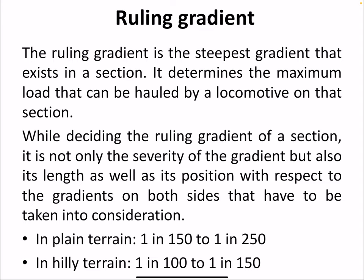The ruling gradient is the steepest gradient that exists in a section. It determines the maximum load that can be hauled by a locomotive on that particular section. While deciding the ruling gradient, it is not only the severity of the gradient, but also its length and position with respect to gradients on both sides that must be considered. In plain terrain, the gradient ranges from 1 in 150 to 1 in 250, and in hilly terrain, from 1 in 100 to 1 in 150.